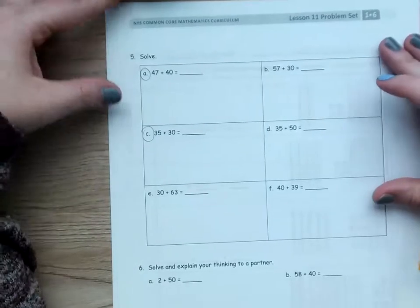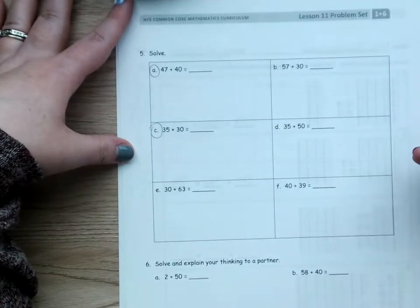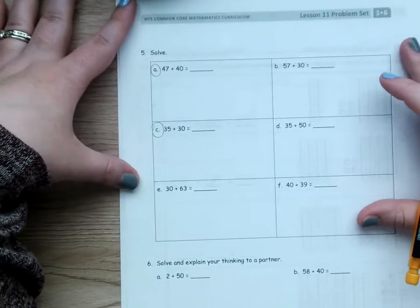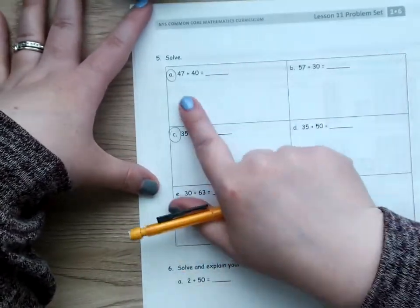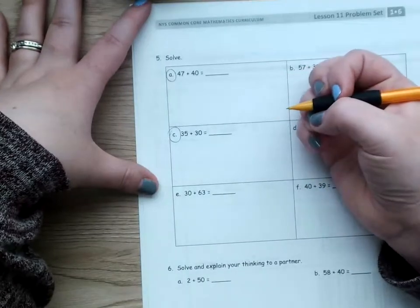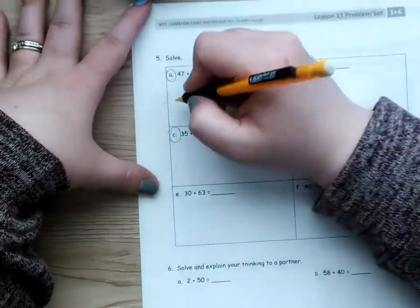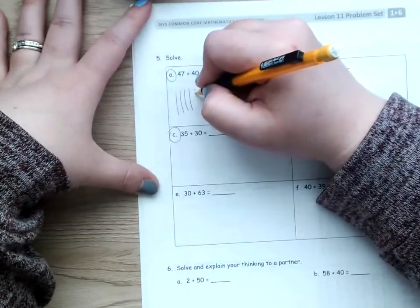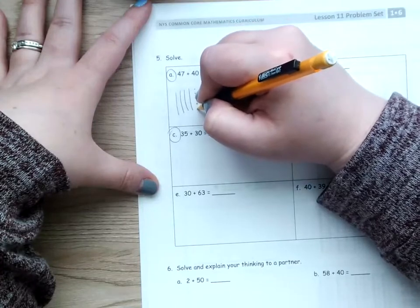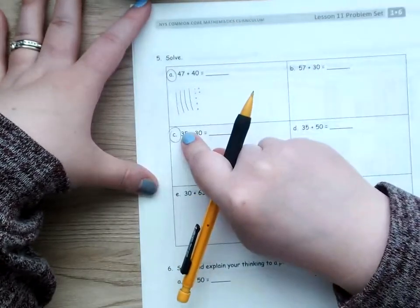I'm going to show you two ways that I like to do. But, if you have a different way that you like to solve, you can do it that way. So, the first way I like to solve is to just draw a picture. So, I've got 47. I'm going to draw quick tens and ones to show 47. So, that would be 40 and then 1, 2, 3, 4, 5, 6, 7. So, that's a quick way to show 47.